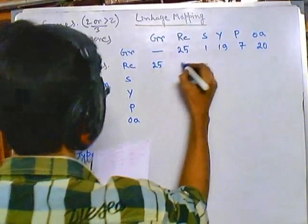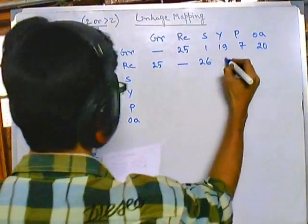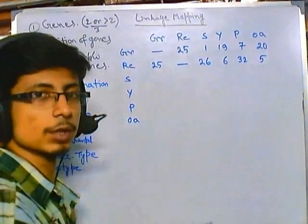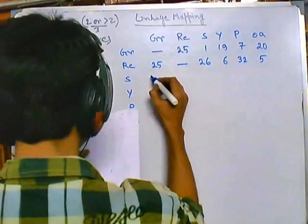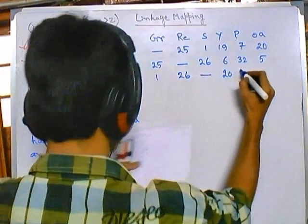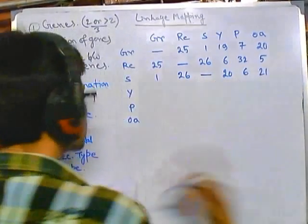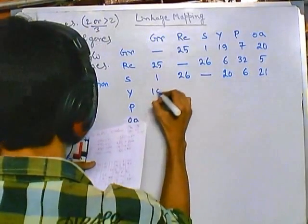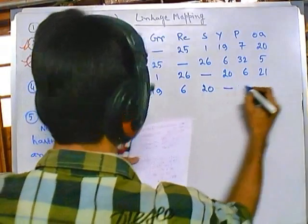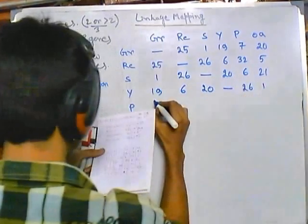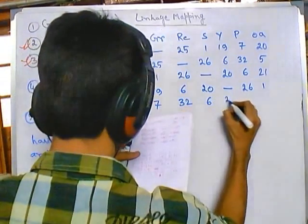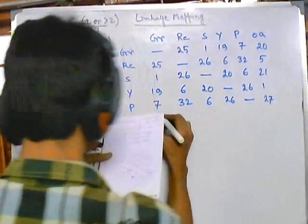Once they provide us the recombination frequencies, it becomes super easy to calculate the rest. They can provide us two things: either raw data or this kind of frequency table. If they provide raw data, it becomes difficult because we need to first find out the recombination frequency from the raw data, and then solve the problem. But in this type of problem, they have already given us the recombination frequency in tabular form, so it becomes easy to calculate the position of all those genes.